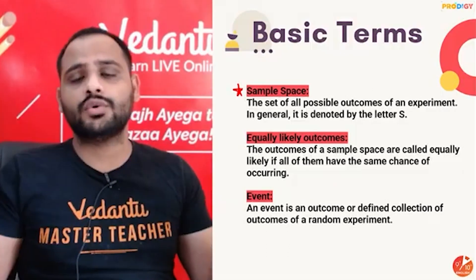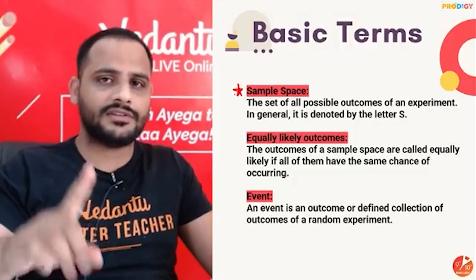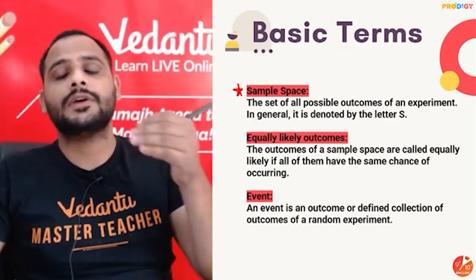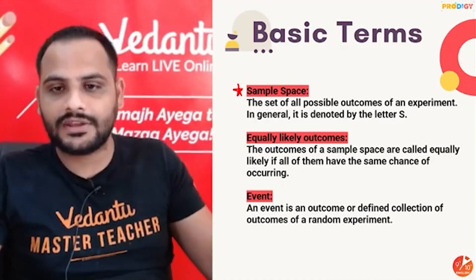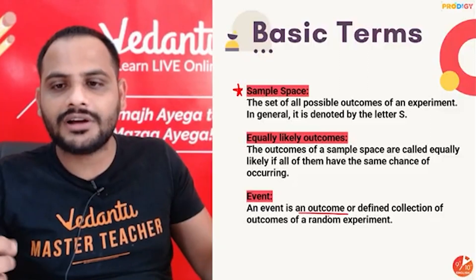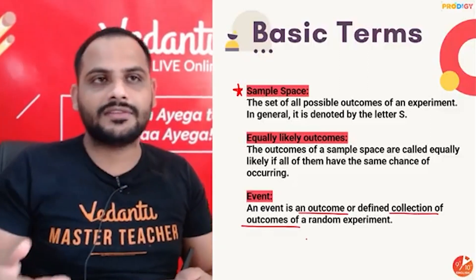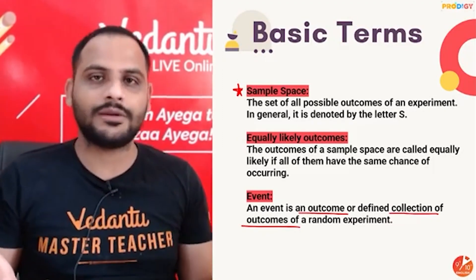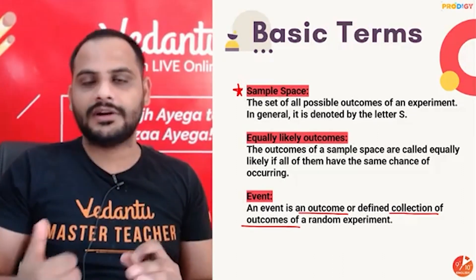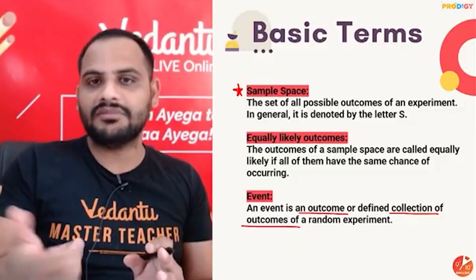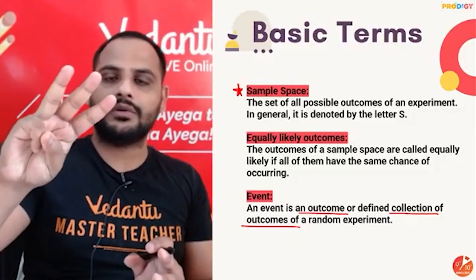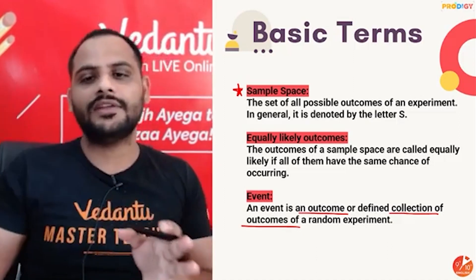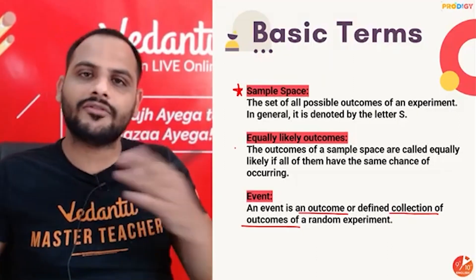Sample space is the total number of possible outcomes, and this is what we find out in every question first. Then we see how many outcomes are favorable to the given event. An event can be any one outcome or a collection of outcomes. For example, if I ask for the probability of getting two on a dice, only one outcome is favorable. But if I ask for an even number, outcomes two, four, and six are all included.